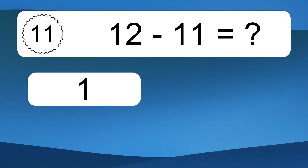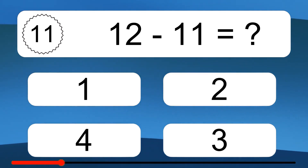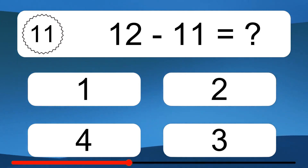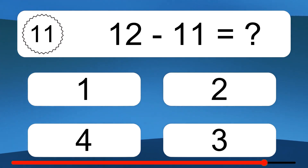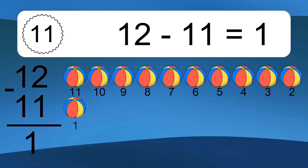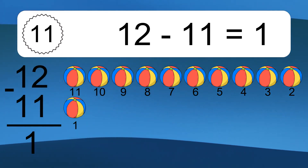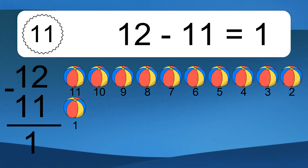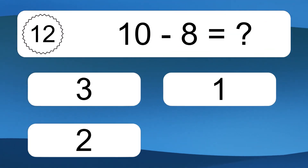12 minus 11 equals what? 12 minus 11 equals 1. Let's count it: 11, 10, 9, 8, 7, 6, 5, 4, 3, 2, 1.